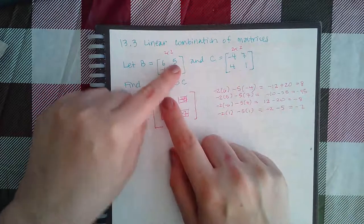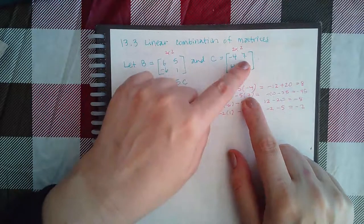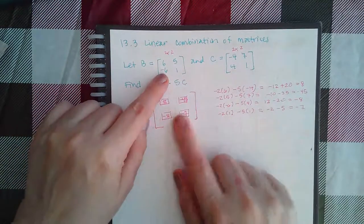Then the same thing for this entry, negative two times that entry, negative five times this entry. Do the combinations. You get the result.